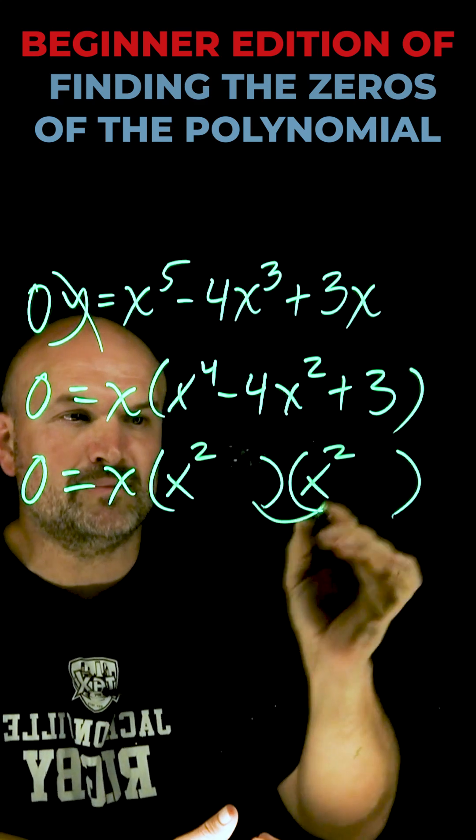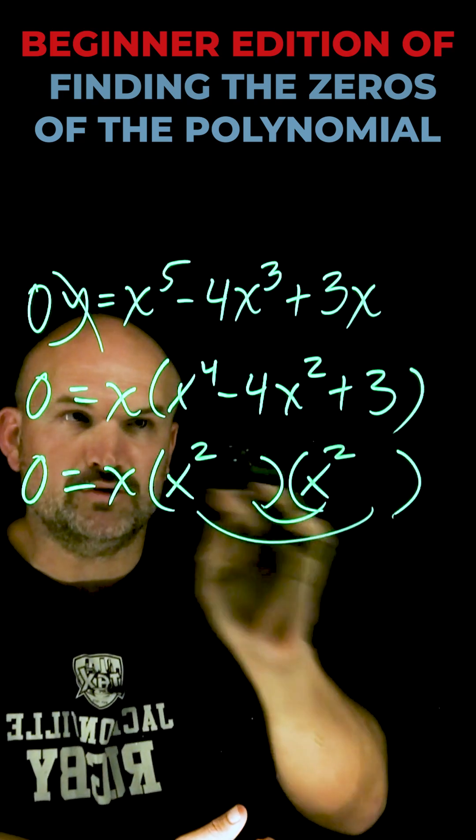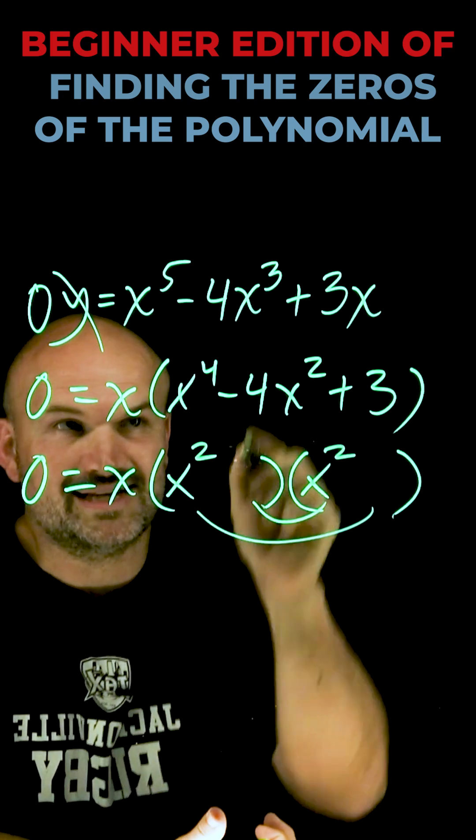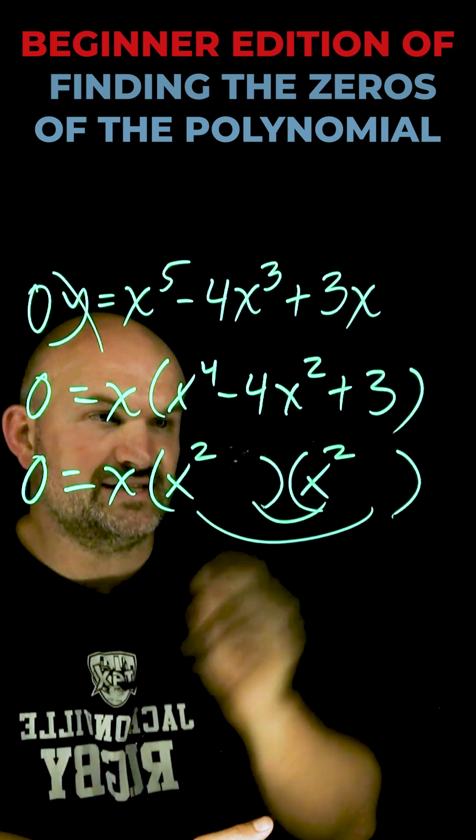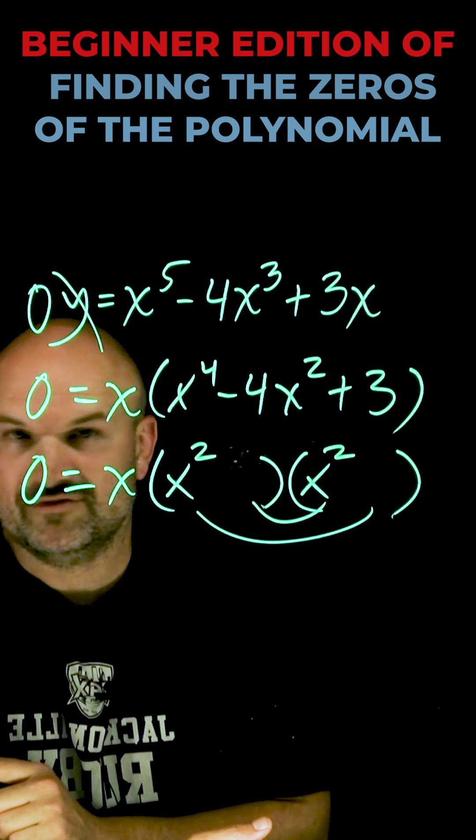That's critically important because remember our inner and our outer need to both be the same term if our middle term is going to be x squared, which in this case, it's negative 4x squared. Now I look at this and I say, what two numbers multiply to give me 3 and add to give me negative 4.